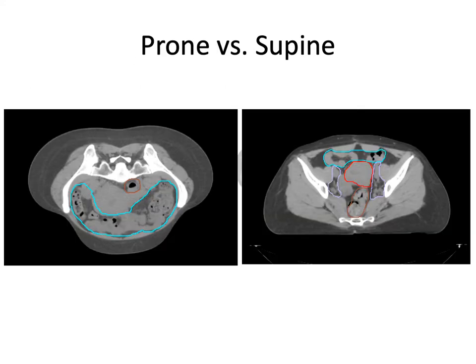Here's an example of why you might want to do prone versus supine in some situations. With a belly board, it can have a cutout where the abdomen falls forward, and the intestines — particularly the small bowel contoured there in cyan — can move out of the pelvis and away from where your beams are going to be treating the posterior pelvis. Sometimes this isn't quite as comfortable for patients and can be more challenging for the therapist to set up daily. So if you're trying to do something more precise or technically challenging, supine is sometimes your more stable option.